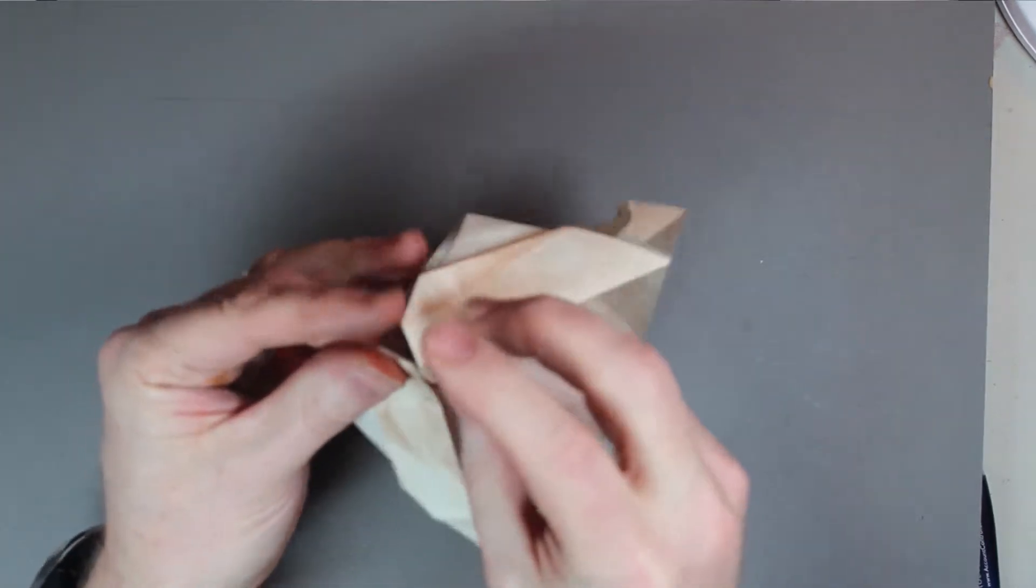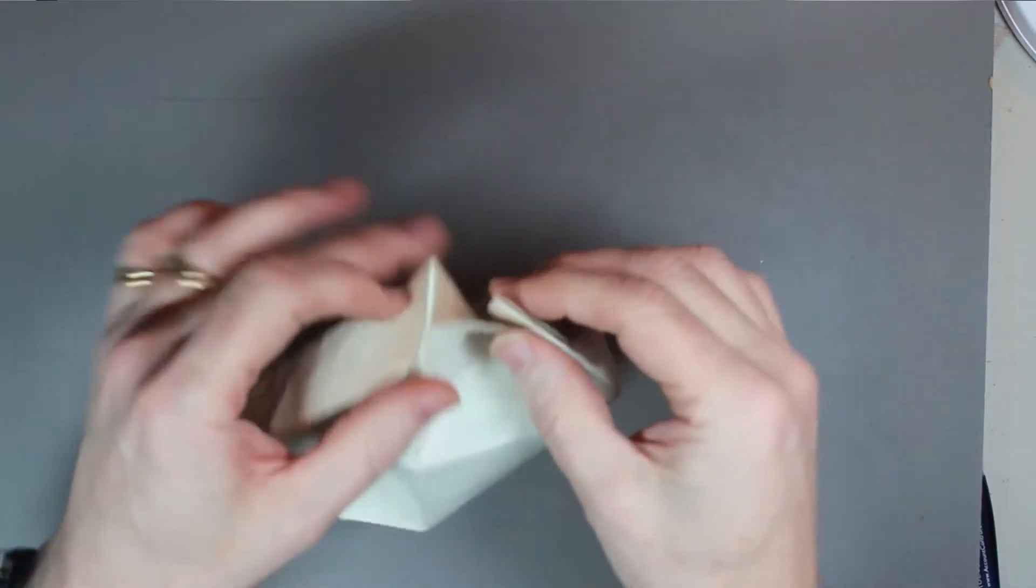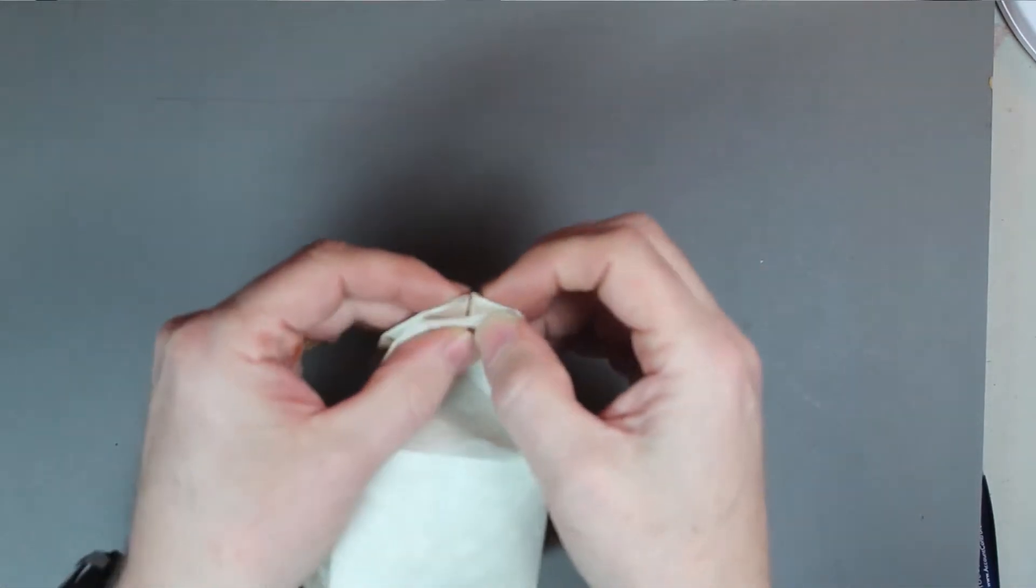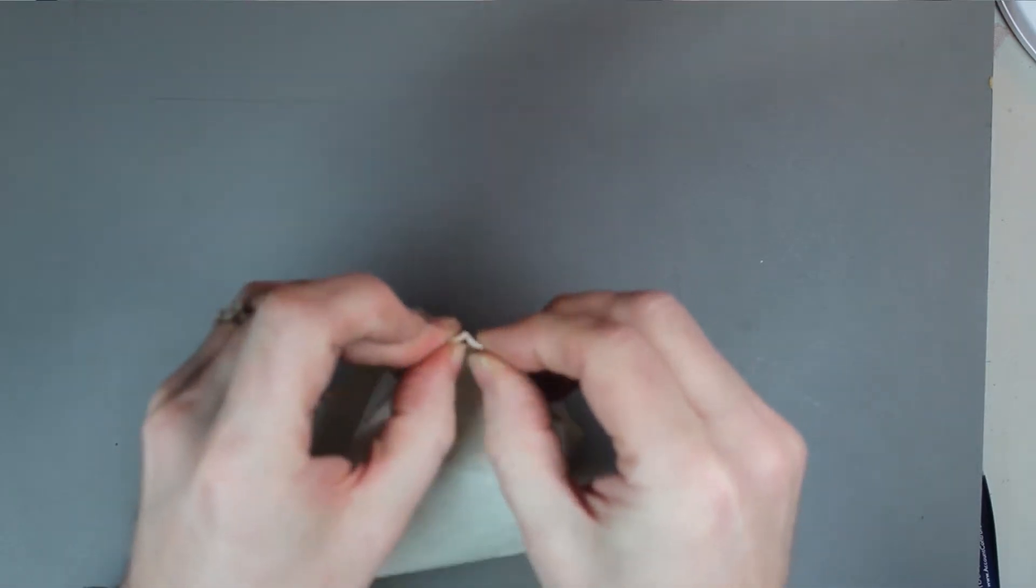And when you proceed around to each side, you'll notice that this box gets stronger and it gets more solid where it's not going to open up. So this is a type of lock.